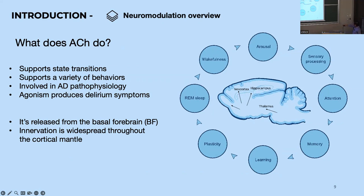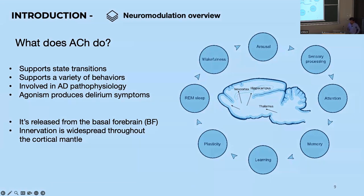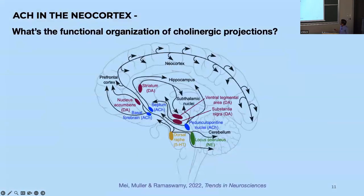In a nutshell, acetylcholine does everything. It modulates processes from wakefulness to arousal to sensory processing, attention, memory — you name it. Acetylcholine is probably involved in all of that in the mammalian cortex.